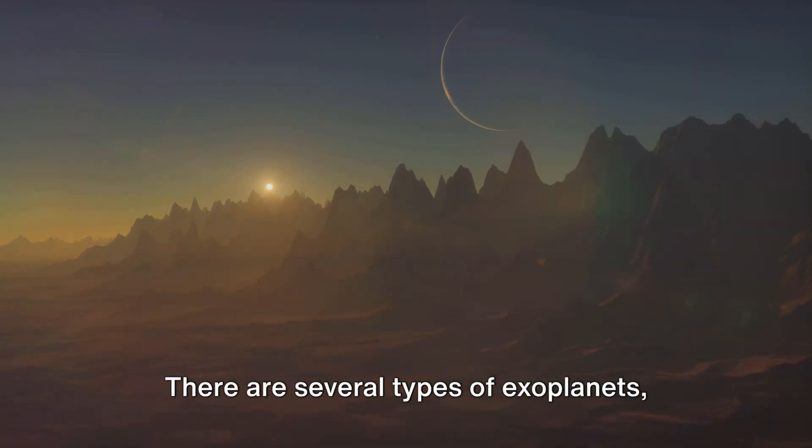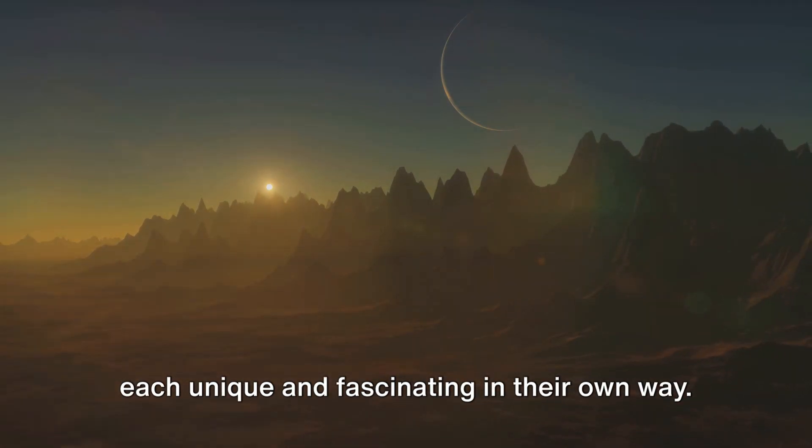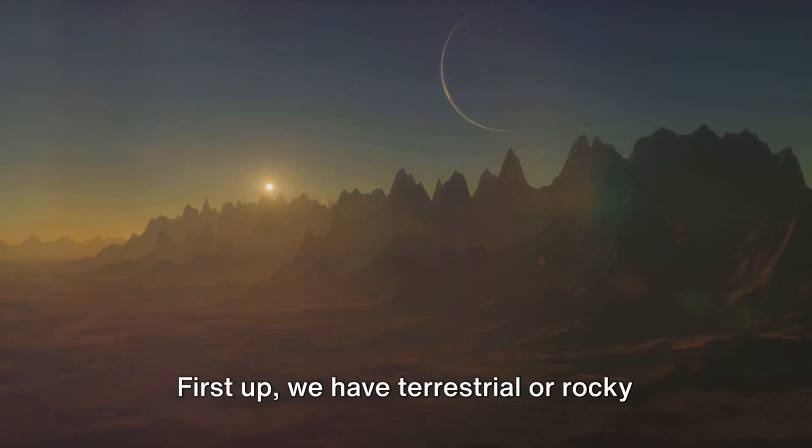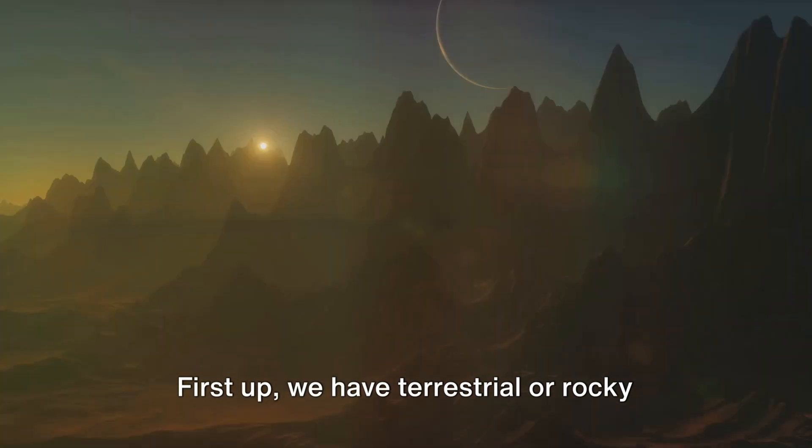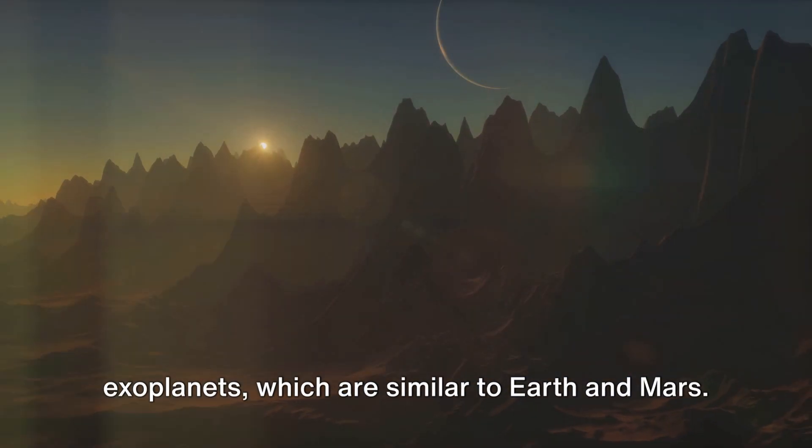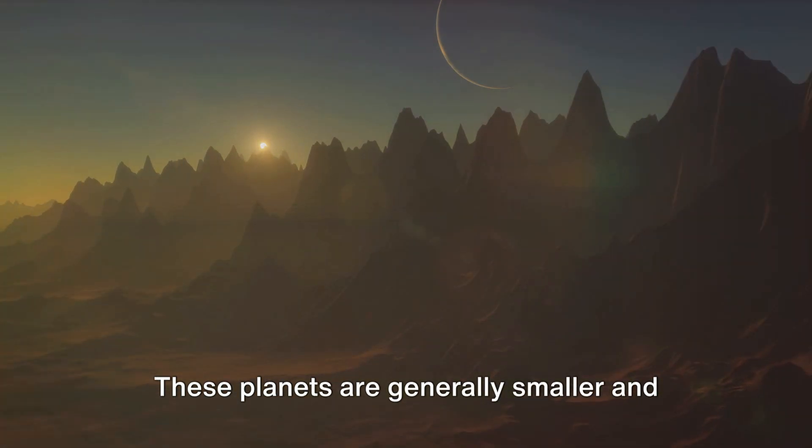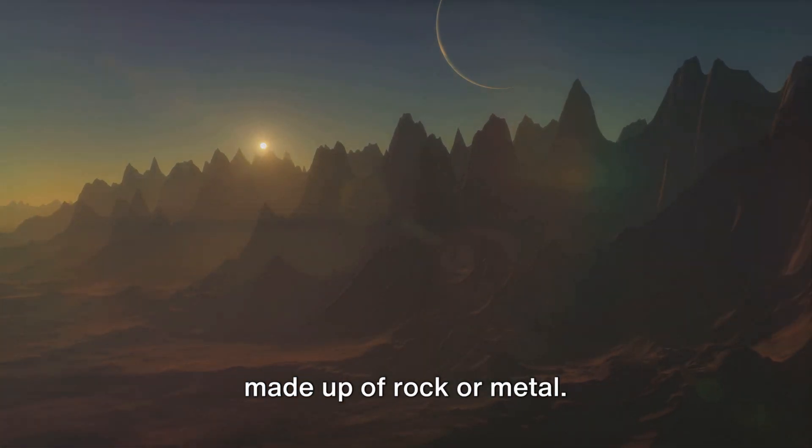There are several types of exoplanets, each unique and fascinating in their own way. First up, we have terrestrial or rocky exoplanets, which are similar to Earth and Mars. These planets are generally smaller and made up of rock or metal.